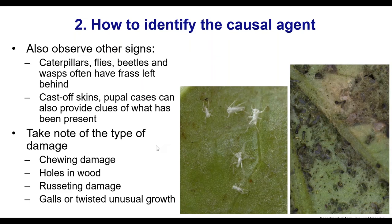When you're looking down your microscope, observe other signs: the remains of insects, the frass they leave behind, the cast-off skins. These can provide clues as to what's been there in the past, because sometimes the damage has occurred and the pest is already gone. Take note of the type of damage — holes in the wood, russeting, galls, or twisted unusual growth — as it gives clues as to where to look and what you're dealing with.